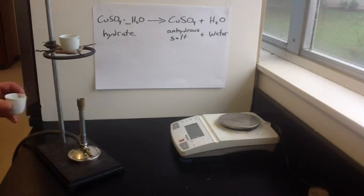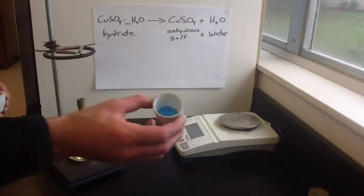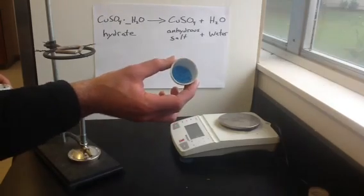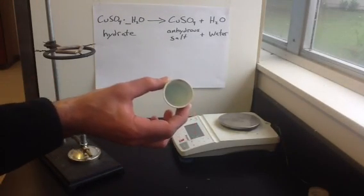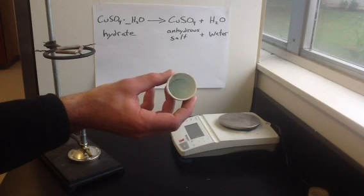When this happens, I forgot one that I already did earlier, so this is what the hydrate looked like. It was a bright blue color. And the anhydrous salt, you can see all the water has been removed, and it changed the color.